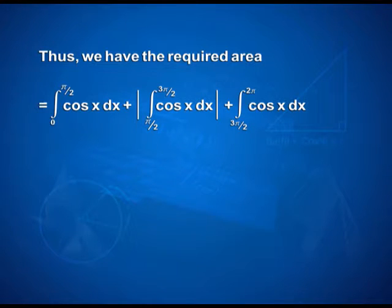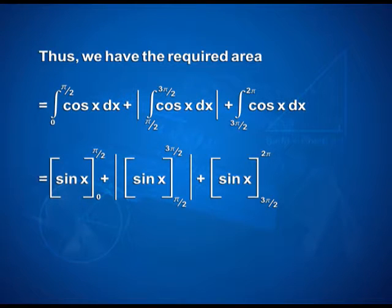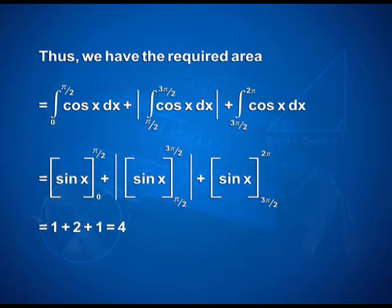Thus, the required area equals integral from 0 to π/2 of cos x dx plus the absolute value of integral from π/2 to 3π/2 of cos x dx plus integral from 3π/2 to 2π of cos x dx. That equals [sin x] from 0 to π/2 plus |[sin x]| from π/2 to 3π/2 plus [sin x] from 3π/2 to 2π. On applying the limits, we get 1 plus 2 plus 1, that is equal to 4.